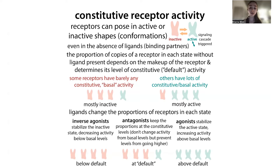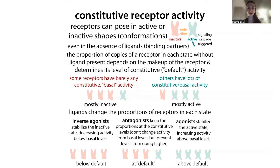The overall activity you observe depends on what proportion of receptors are in each state. If you have more receptors in total, you get more activity even if many are inactive. Basal activity depends on the makeup of the receptor — how flexible it is and its inherent tendency to be in an inactive versus active shape. Some receptors have very low basal activity, mostly in inactive form, while others have high basal activity with many receptors in the active form even without a ligand.